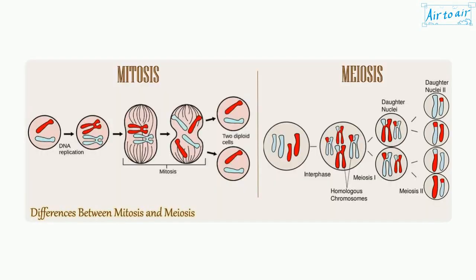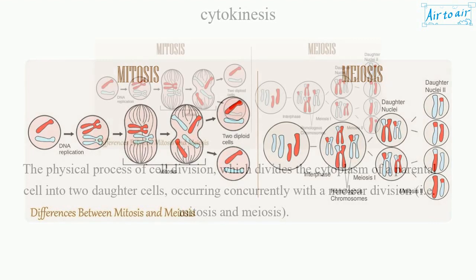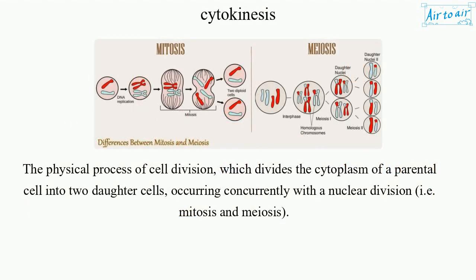Cytokinesis is the physical process of cell division, which divides the cytoplasm of a parental cell into two daughter cells, occurring concurrently with a nuclear division, i.e. mitosis and meiosis.